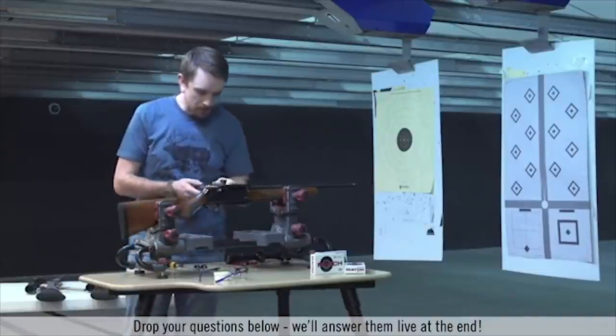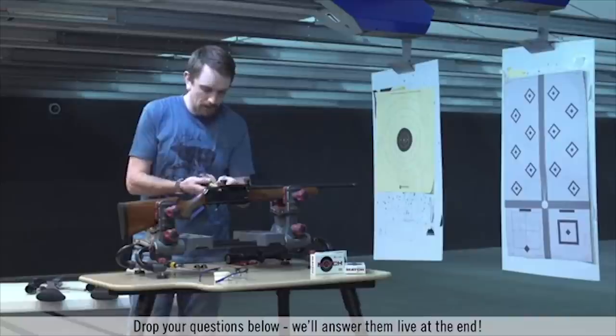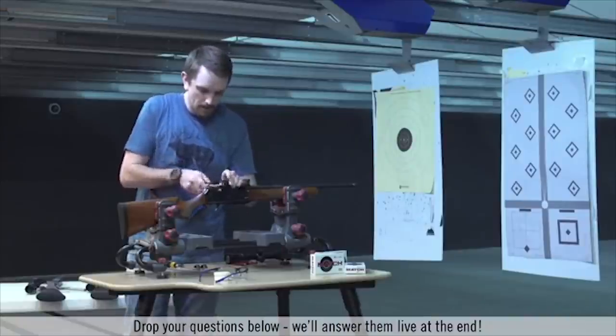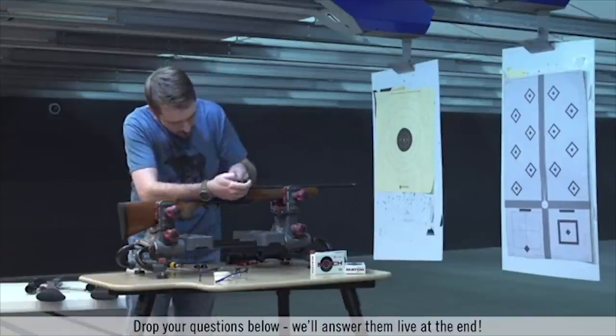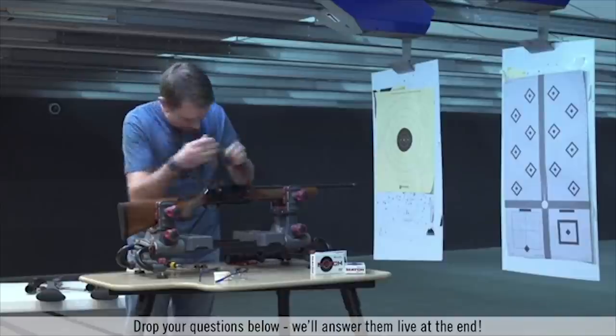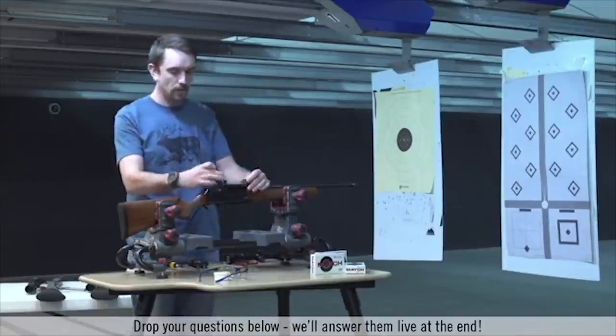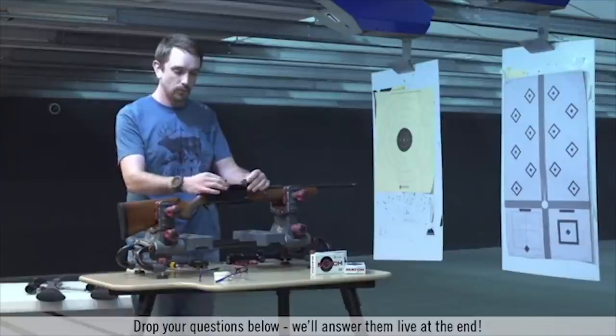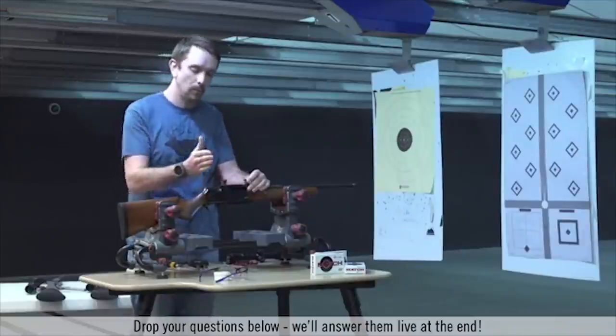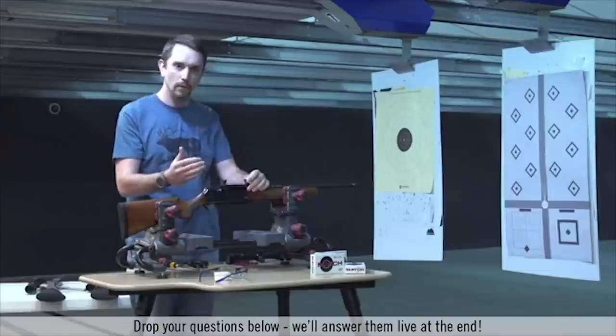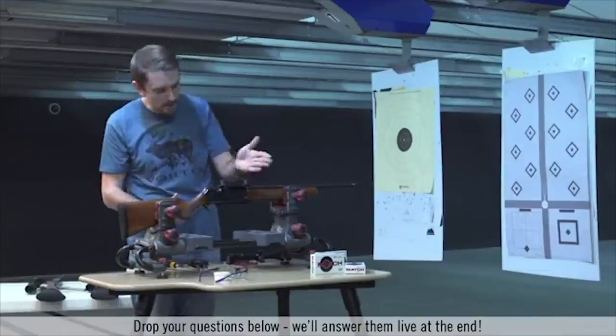And then we're going to loosen the rear windage adjustment drums on the back, just to give us a little bit of leeway and a little bit of play. Now with these rings they're very interesting in that the rear screws on the ring assembly will move side to side and they're going to move that ring left to right and pivot at the front.